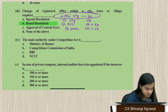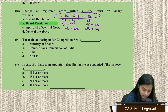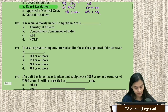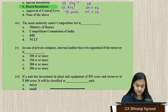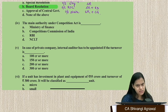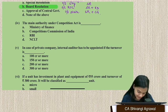Question 4: The main authority under the Competition Act is — everyone knows it's the CCI, which stands for Competition Commission of India. No need to think twice about that.